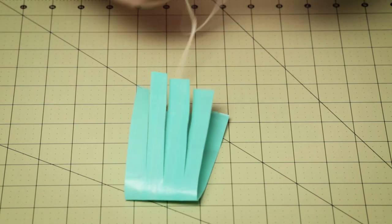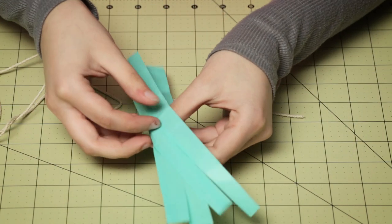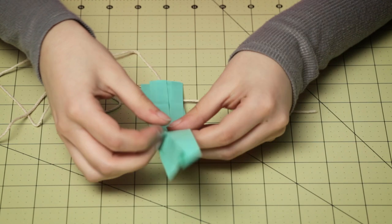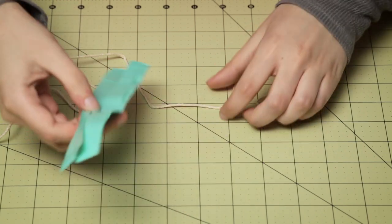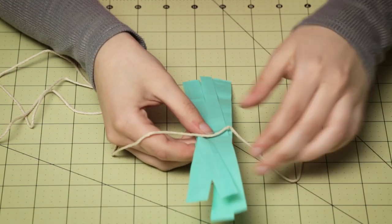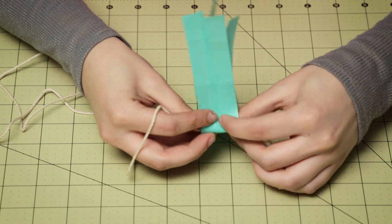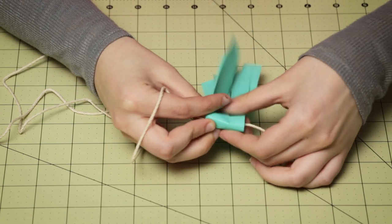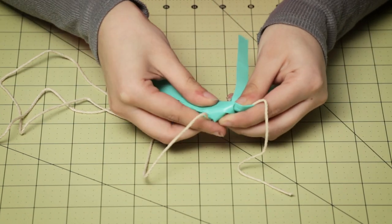So now we're going to take our string and then we're going to fold this in half lengthwise. And then we're going to take our string and fold this over. And then you want to give it a little bit of a twist.